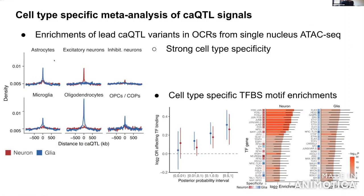Of the shared open chromatin regions, we used a multivariate Bayesian meta-analysis with Mashr to identify cell-type-specific versus shared genetic effects, finding only about 3,600 with shared genetic effects across the two cell types — so only about 10% of chromatin accessibility QTLs are shared across cell types, strongly supporting cell-type specificity and giving insight into cell-type-specific disease mechanisms.